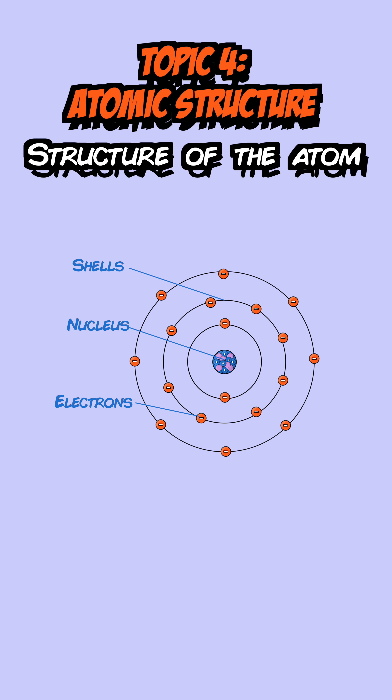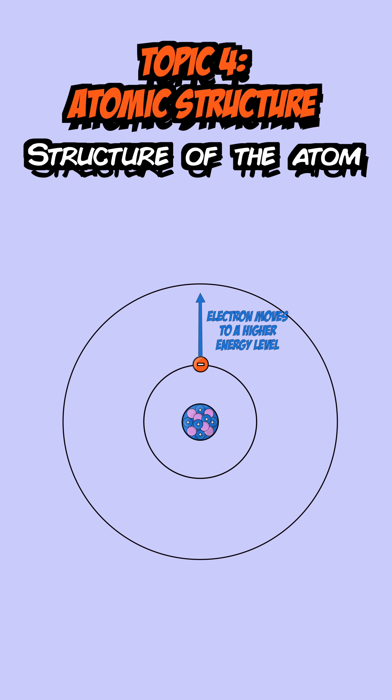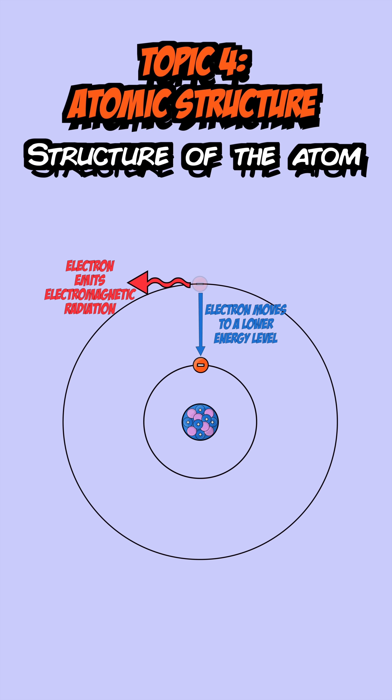In this structure, an atom is made up of protons, neutrons and electrons, each with specific masses and charges. Protons and neutrons are found in the nucleus, and electrons orbit the nucleus in shells or energy levels. These electrons can move up energy levels by absorbing electromagnetic radiation and can go down by emitting electromagnetic radiation.